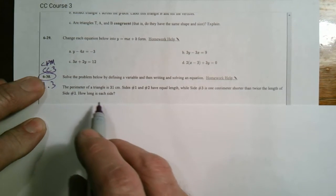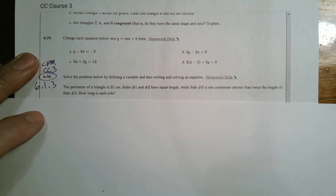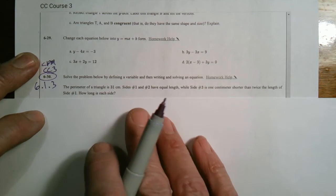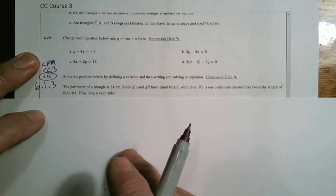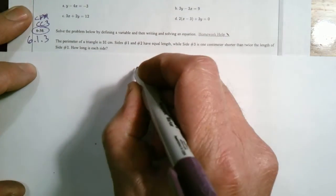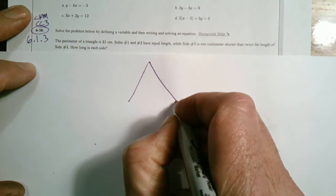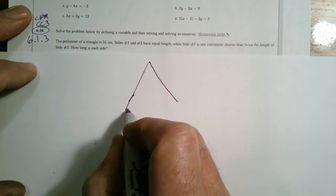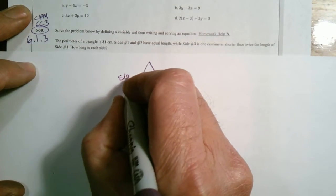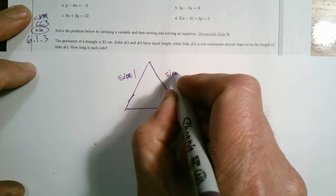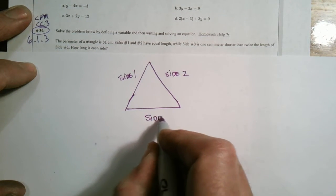If I'm going to do this question, the first thing I like to see is if I can draw a diagram to help me define that variable. In this case, being a triangle, we absolutely can draw this situation. And it tells me that sides 1 and 2 have equal length, so I'm going to draw an isosceles triangle here. So I can see that this is side 1, and this is side 2. Therefore, this will be side number 3.